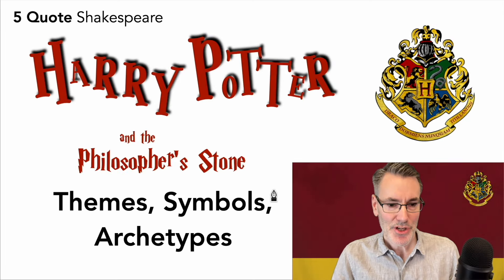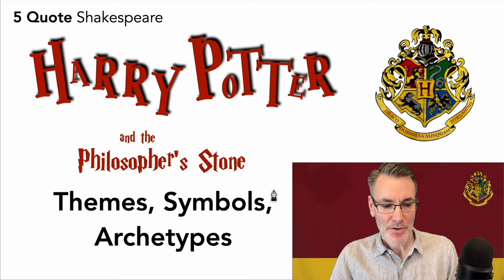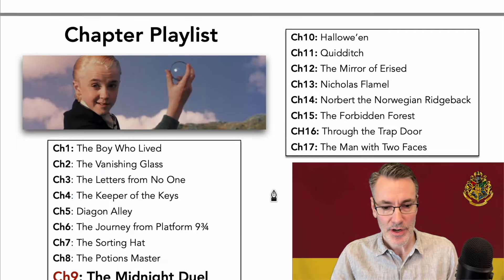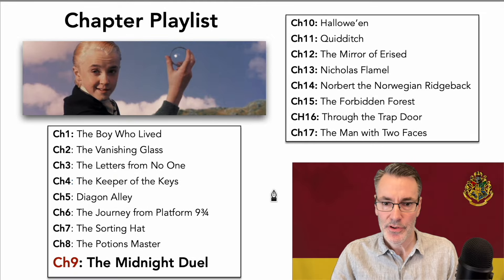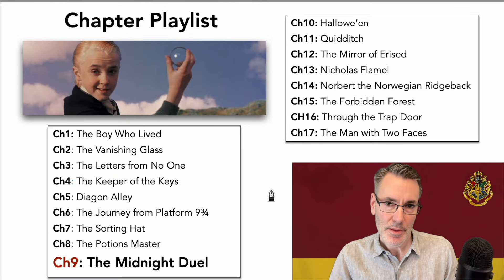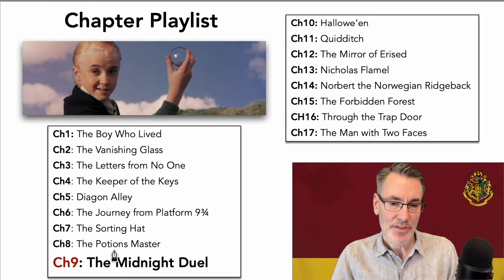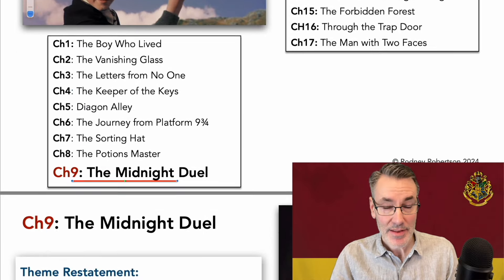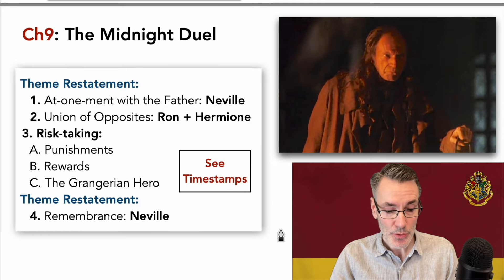Hi everyone, welcome to Five Code Shakespeare, Harry Potter and the Philosopher's Stone — themes, symbols and archetypes. In this series we do a close reading thematic analysis of each chapter, and today we're going to look at Chapter 9, The Midnight Duel.